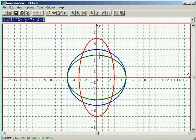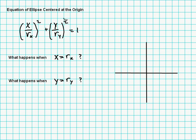So it looks like we have a way of specifying an ellipse. Let's take the equation of an ellipse centered at the origin. All we've done is taken the equation of a circle and allowed the two r's to be different. And let's see that this makes sense as far as plotting the ellipse — here's r sub x and here's r sub y.